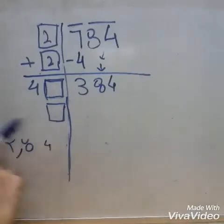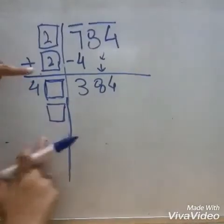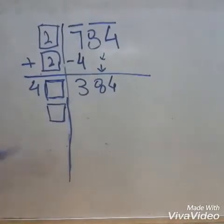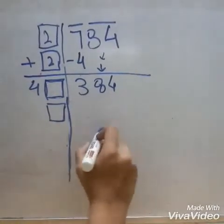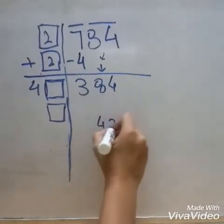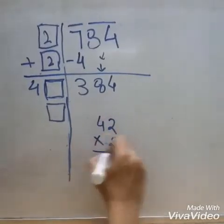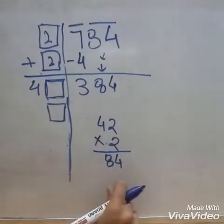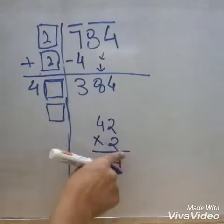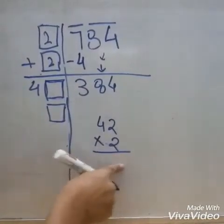So the possibility is that in this box there would be either 2 or 8. Let's try it with 2 first. 42 into 2, that is 84. Since 84 is much smaller than 384, we will try again with 8.